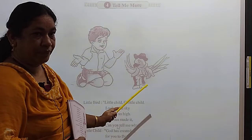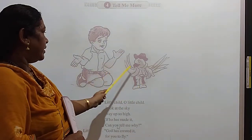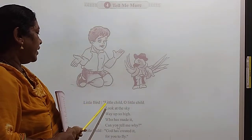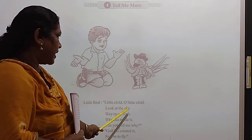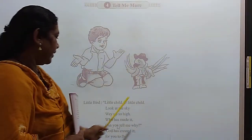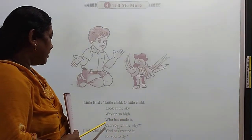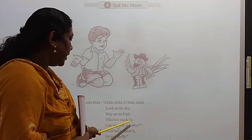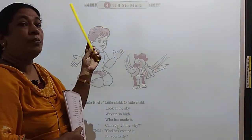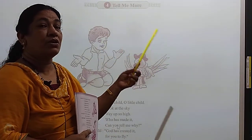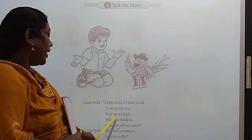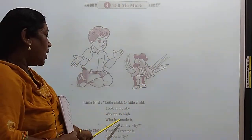This is a little bird and a little child. Little bird, little child, oh little child, look at the sky. This is a little bird, way up so high. Who has made it?